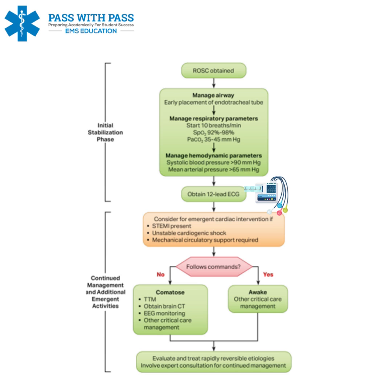Next is obtaining a 12-lead ECG. At this point, we may not be entirely sure why the patient was in cardiac arrest, but we go ahead and obtain a 12-lead. Even as an EMT-Basic, we can put the electrodes on — get the 10 stickers on. We might not be interpreting it, but we can do that for ALS.